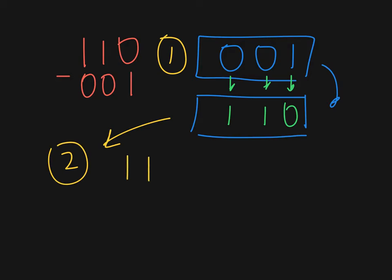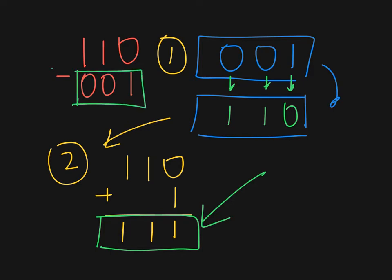So we take the 1, 1, 0, and we have to add one to it, which gives us 1, 1, 1. So the two's complement of 0, 0, 1 is 1, 1, 1. That's the two's complement.